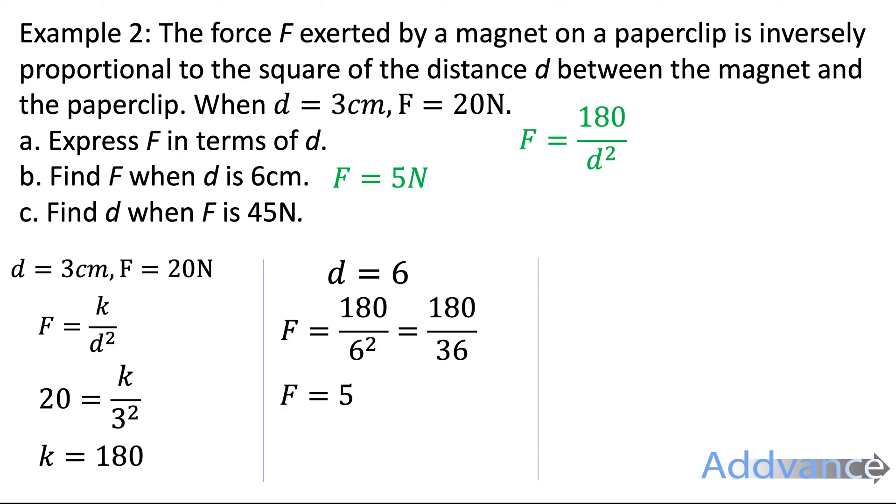Find d when F is 45 newtons. So F is 45. And we use the equation F equals 180 divided by d squared. So 45 equals 180 over d squared. We multiply up by d squared, and then we divide by 45.